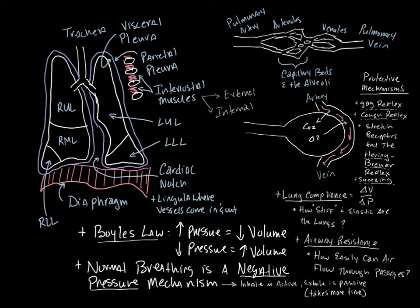Looking at the large-scale structure of the lungs: you have a right lung and a left lung. The right lung has three lobes — right upper, right middle, and right lower — with the apex at the top and the base at the bottom. On the left lung, there is a cardiac notch — an indentation where the heart sits, since in most people the heart lies more to the left.